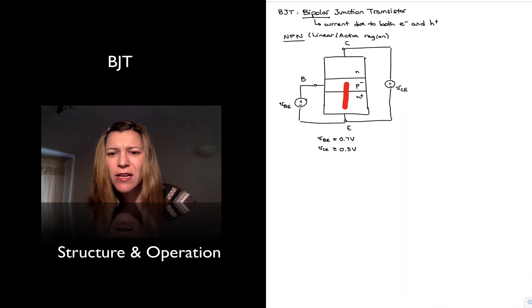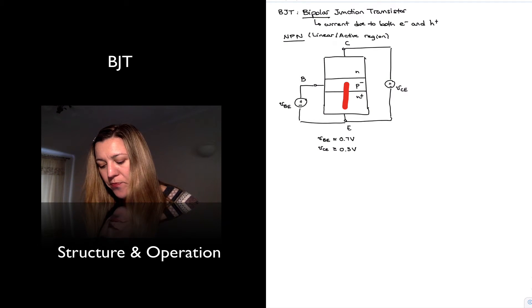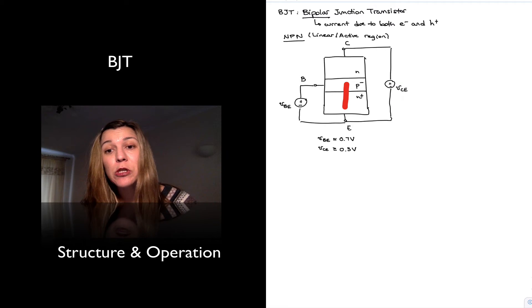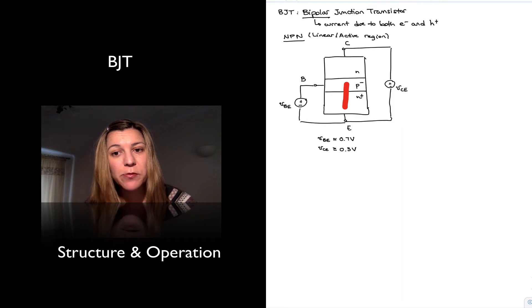Now, you may think, well, it is a reverse bias PN junction, so current normally shouldn't flow through a reverse bias PN junction. And I'm referring to the base collector junction. And that is true. Except, if you remember, there is a small reverse bias current in a reverse bias PN junction, which is due to the minority carriers.